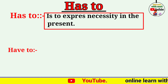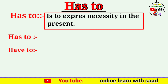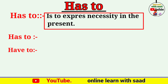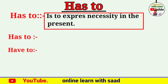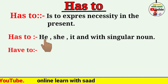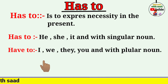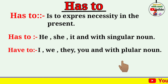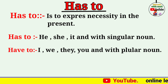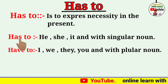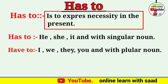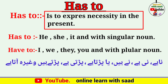Have to میں میں نے آپ کو یہی definition بتایا تھا، لیکن 'has to' وہاں استعمال نہیں ہو سکتا۔ 'Has to' singular کے ساتھ استعمال ہوتا ہے — یعنی he, she, it اور singular noun کے ساتھ۔ جبکہ 'have to' استعمال ہوتا ہے I, we, you, they اور plural noun کے ساتھ — بس اتنا فرق ہے۔